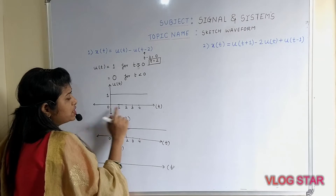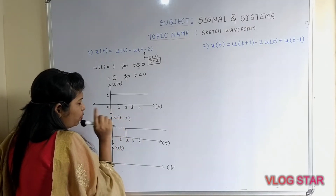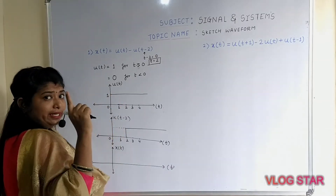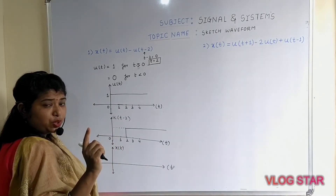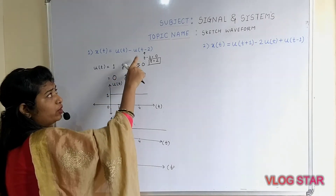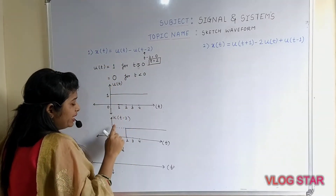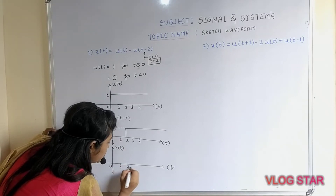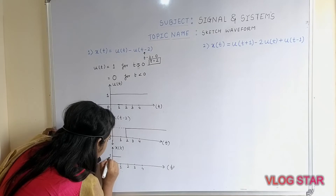Consider the range from 0 to 4. For the range 0 to 1: u(t) has amplitude 1, u(t − 2) has amplitude 0, so 1 − 0 = 1. Consider the axis points 0, 1, 2, 3, and 4. For 0 to 1, the amplitude is 1.